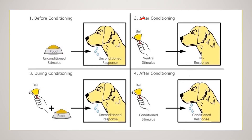Before conditioning, the unconditioned stimulus — the food — will produce the unconditioned response, which is salivation. Before conditioning, the bell sound alone, which is the neutral stimulus, will not be able to produce any response.